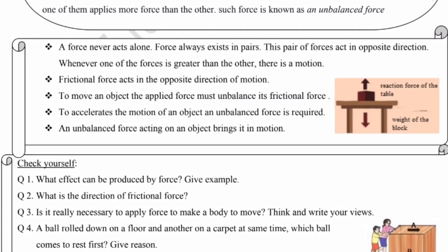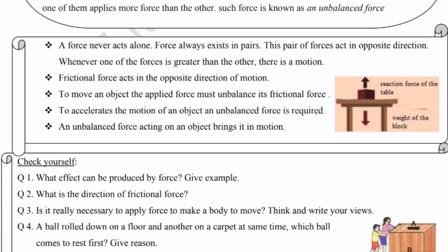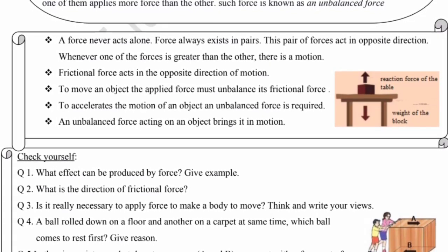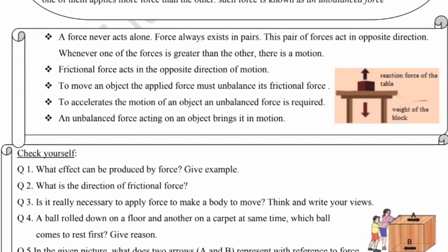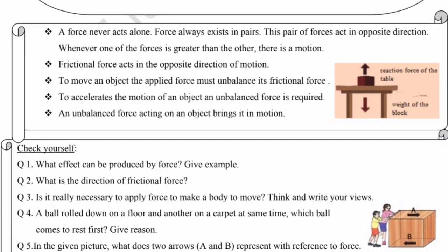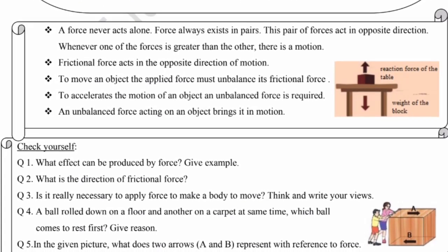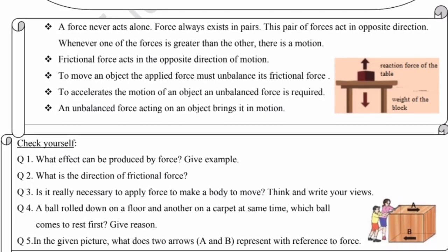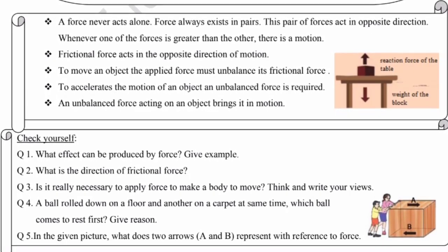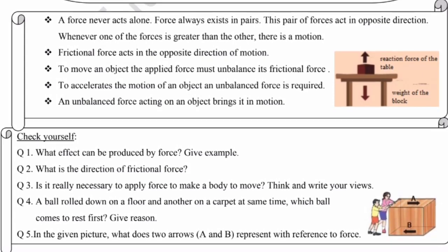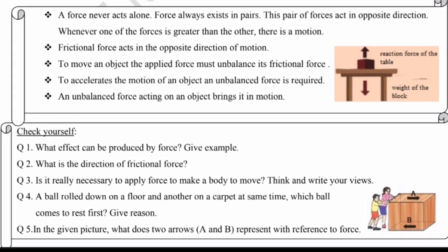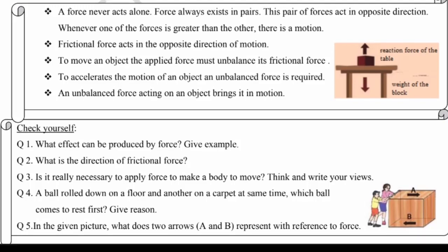An unbalanced force acting on an object brings it into motion — ایک طرف unbalanced force لگے گی تب ہی object میں motion ہوگا۔ We can also see the reaction force at the table: the table exerts an upward force, and the object placed on it exerts a downward force — the table balances that downward force.